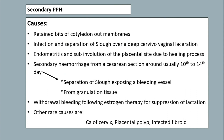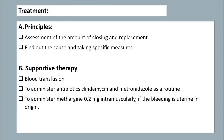Secondary PPH: causes include retained bits of cotyledons or membranes, infection, and separation of slough over a deep cervico-vaginal laceration, endometritis, sub-involution of the placenta site due to healing process, and secondary hemorrhage from caesarean section around 10 to 14 days, without bleeding following estrogen therapy for suppression of lactation. Other rare causes include carcinoma of the cervix, placental polyp, and infected fibroid. Treatment principles include assessment of the amount of bleeding and finding the cause and taking specific measures.